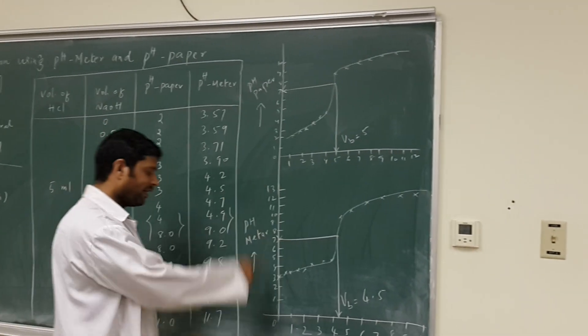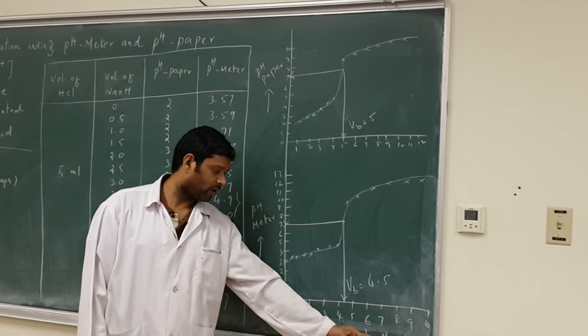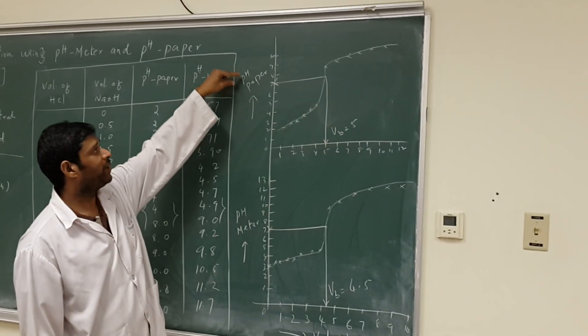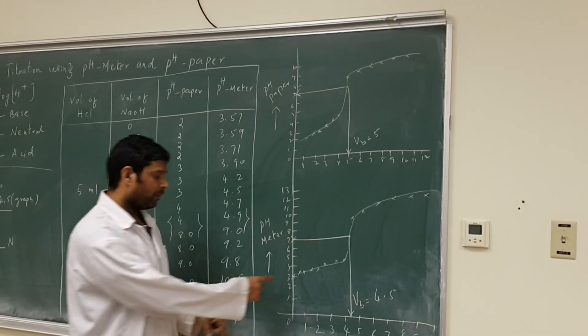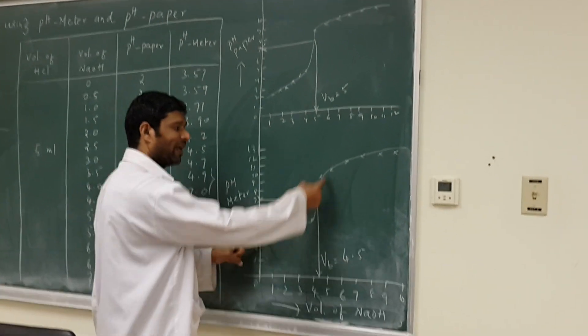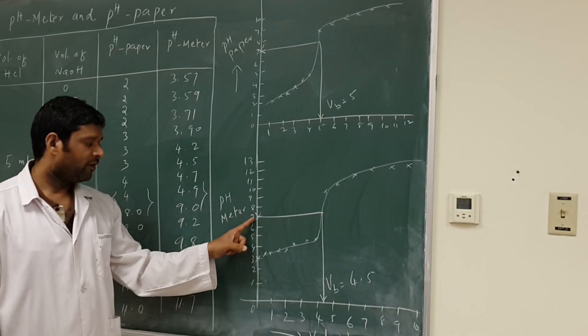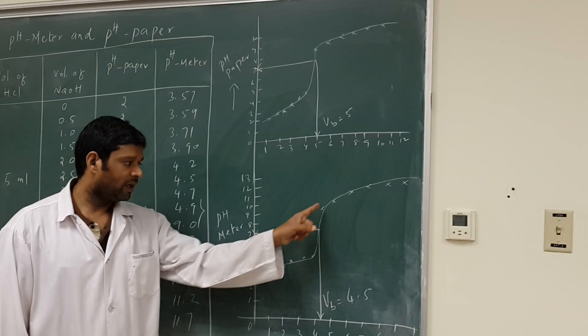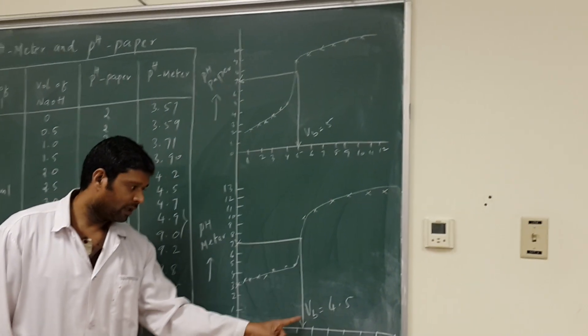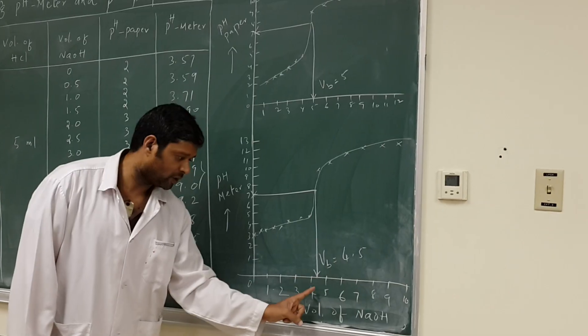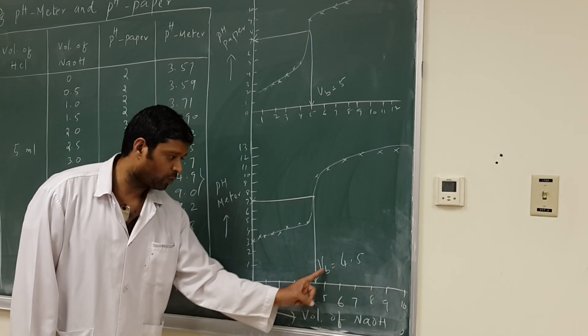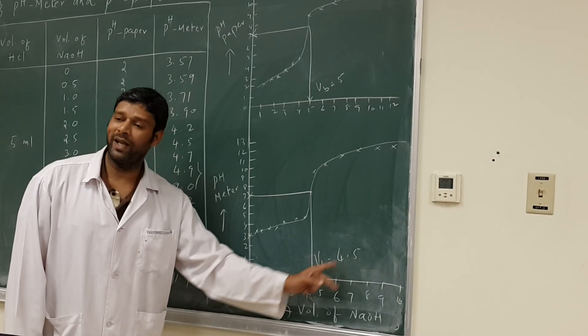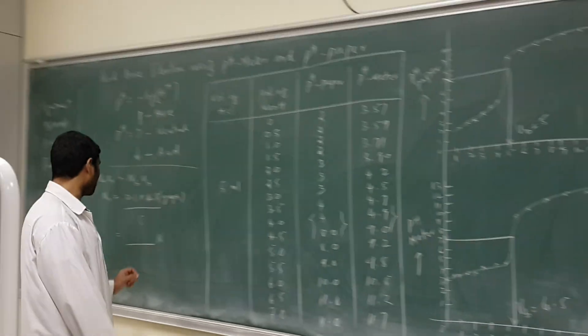See the graph here. In the graph, when you plot volume of sodium hydroxide versus pH meter as well as volume of sodium hydroxide versus pH paper, the points when you plot will give you a graph like this. At pH 7, draw the line towards the curve, then draw the perpendicular line. The line which meets the x-axis is the volume of sodium hydroxide. This is VB, volume of base 4.5.